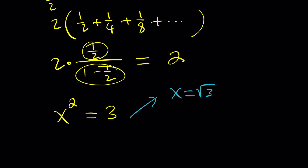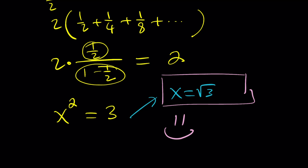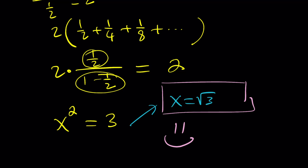So x equals the square root of 3 is our solution — and remember, we assumed x is positive, so we should think about what happens if it's negative. This brings us to the end of the video. Thank you for watching; please comment, like, and subscribe. See you next time — be safe, take care, bye bye.